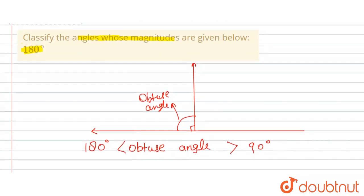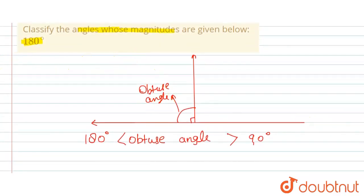So this represents the category of obtuse angle. That means 180 degrees is equal to obtuse angle. So this is the final answer for this question. Thank you.